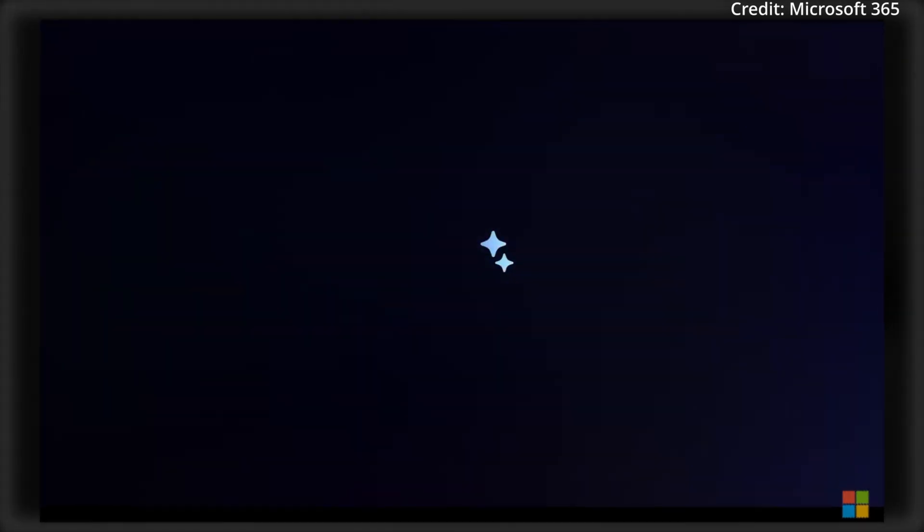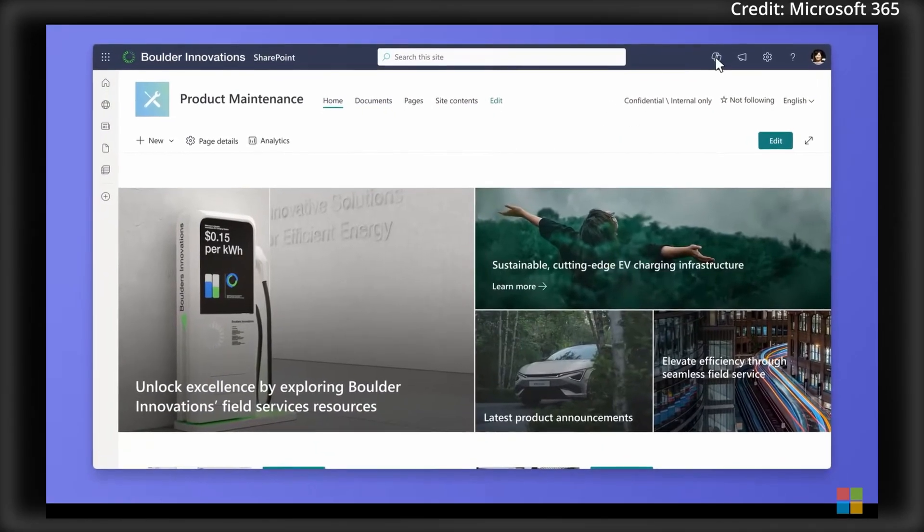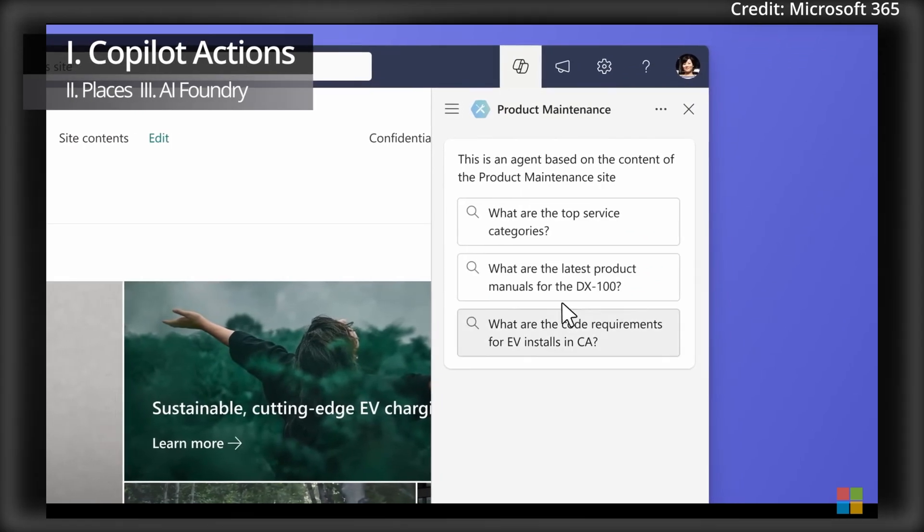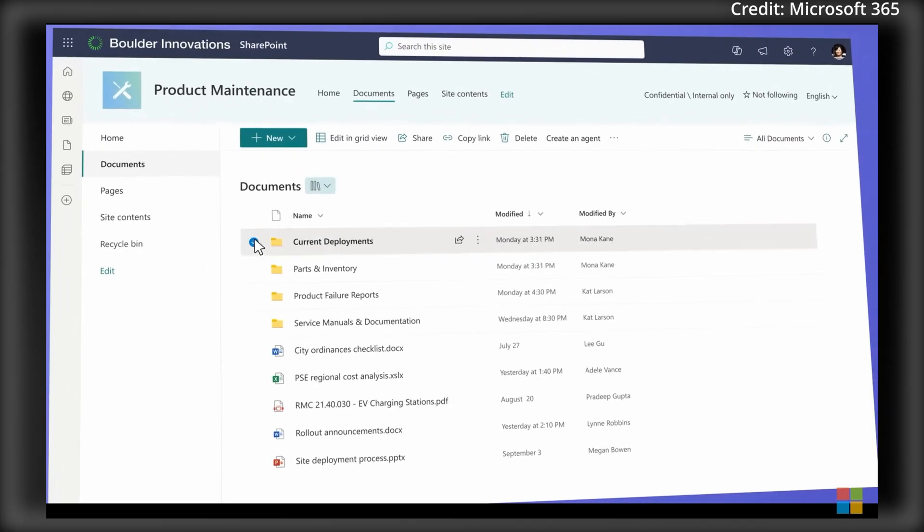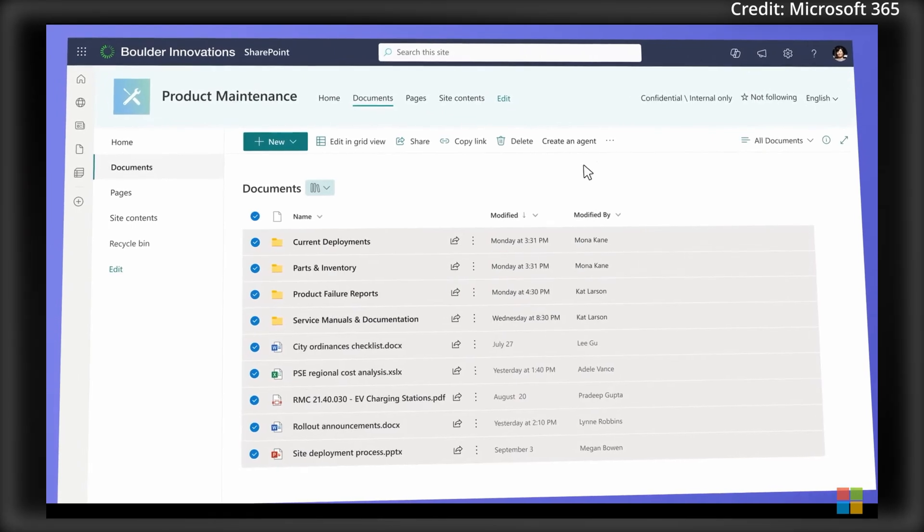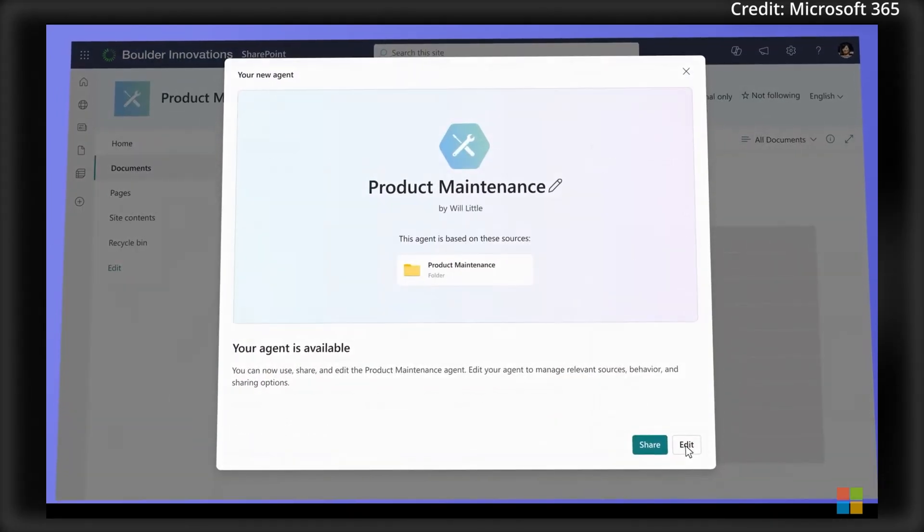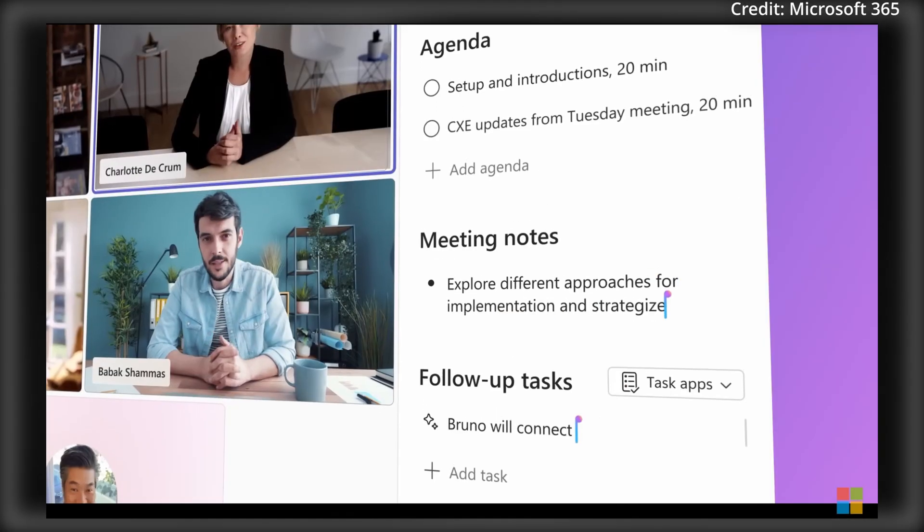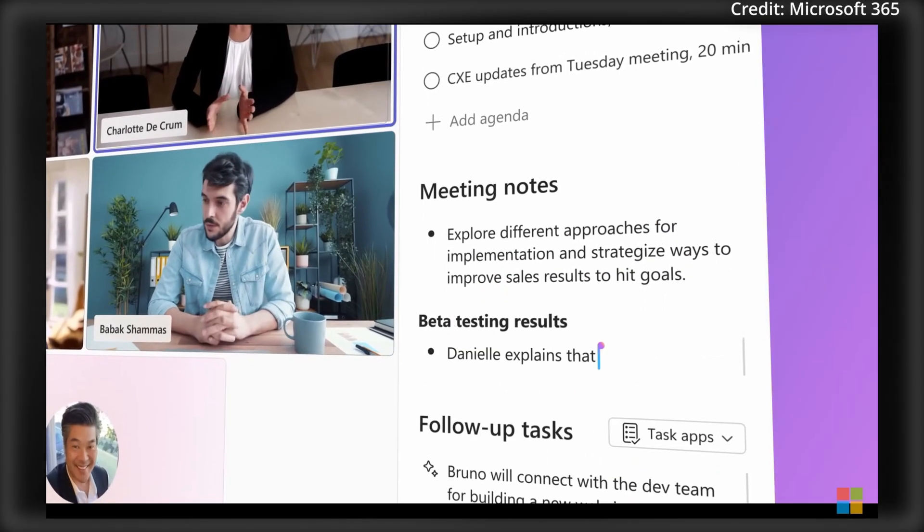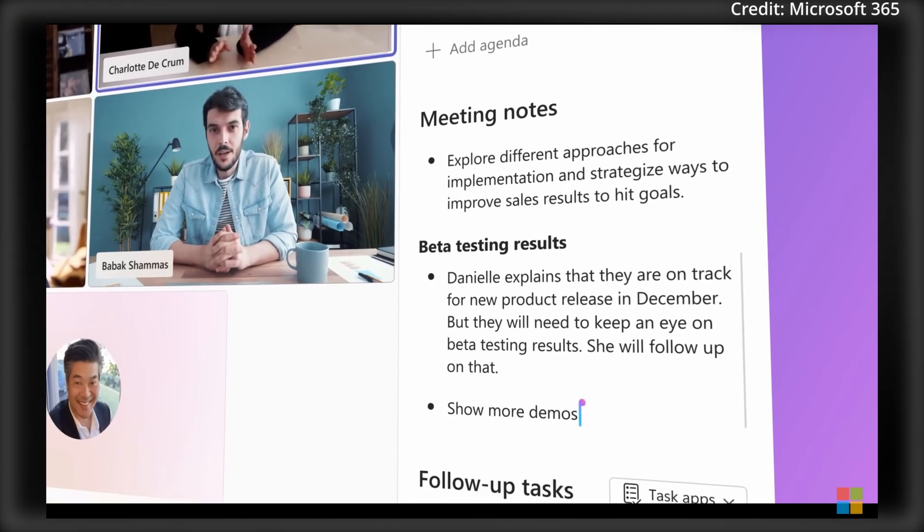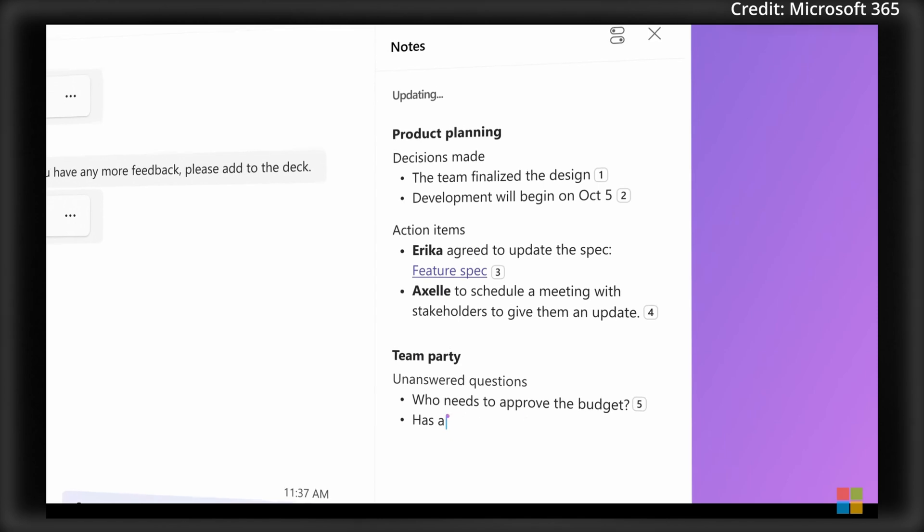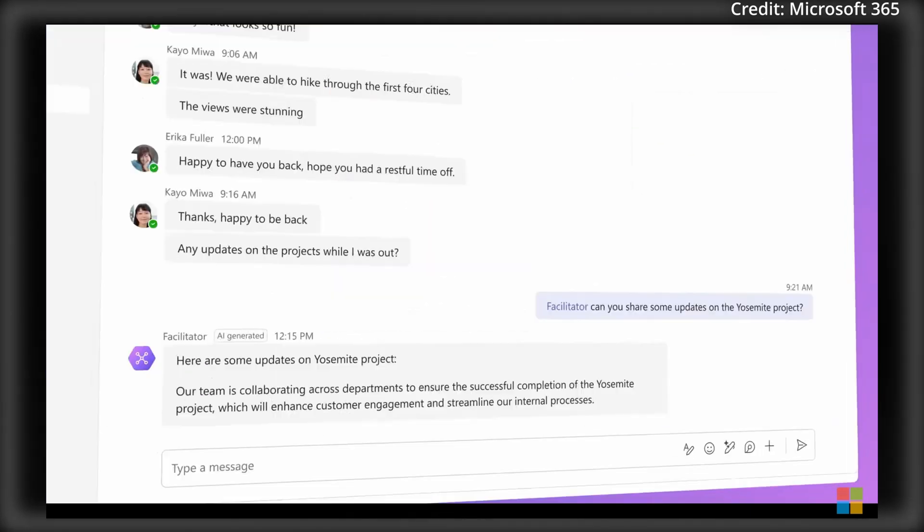Microsoft just announced a series of groundbreaking updates aimed at transforming productivity, with the first of these being Copilot Actions, a feature currently in private testing that simplifies task automation across Microsoft 365 apps through natural language prompts. In fact, by eliminating the complexity of traditional manual configurations, Copilot Actions enables users to delegate routine tasks like generating meeting summaries, creating weekly reports, or compiling missed communication updates after time away from work.